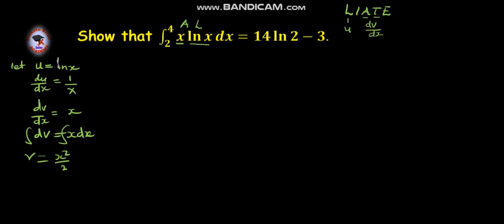The method states that our integral is equal to U times V minus the integral of V dU dx with respect to x.